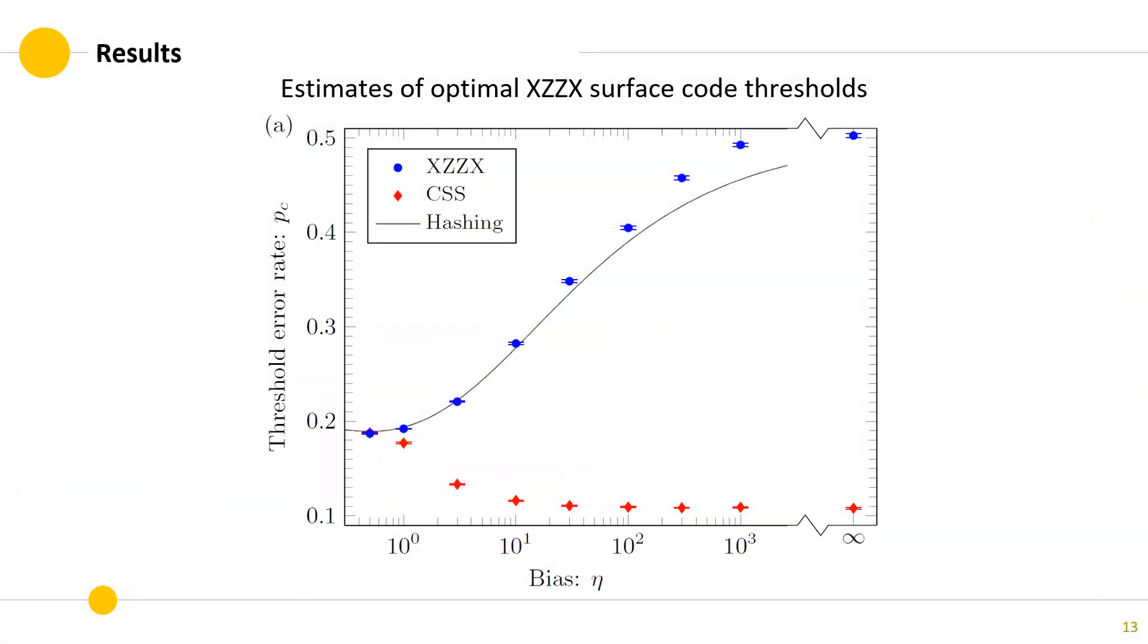We can better see how the XZX code behaves in case of bias noise compared to CSS surface code and the hashing bound. The solid line is the zero rate hashing bound for the associated Pauli noise, where the entropy of the channel is equal to one bit. For high bias, where mu is bigger than 30, the estimates for the XZX code exceed the hashing bound. This shows how powerful the XZX surface code can be when the physical qubits are designed to have structured noise.